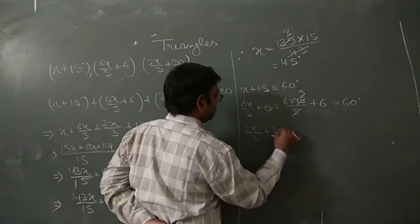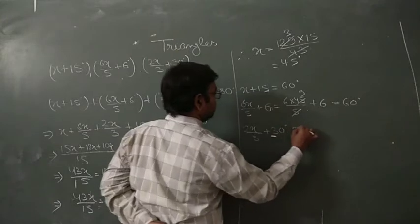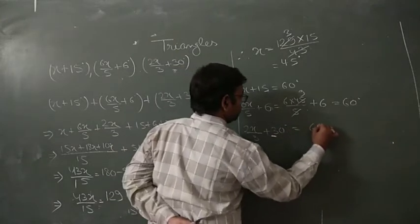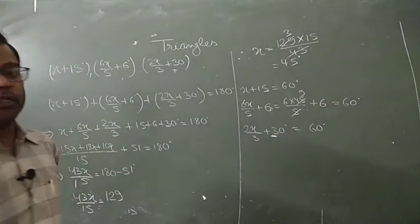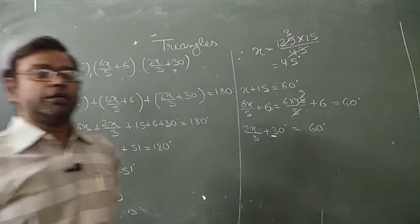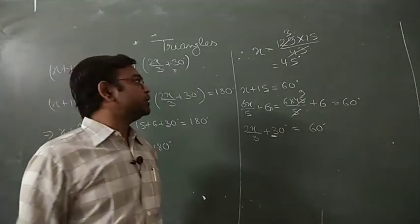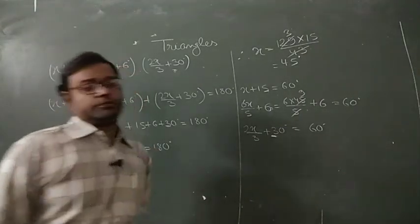Since all three angles are 60 degrees, this proves that it is an equilateral triangle. I hope this is clear.